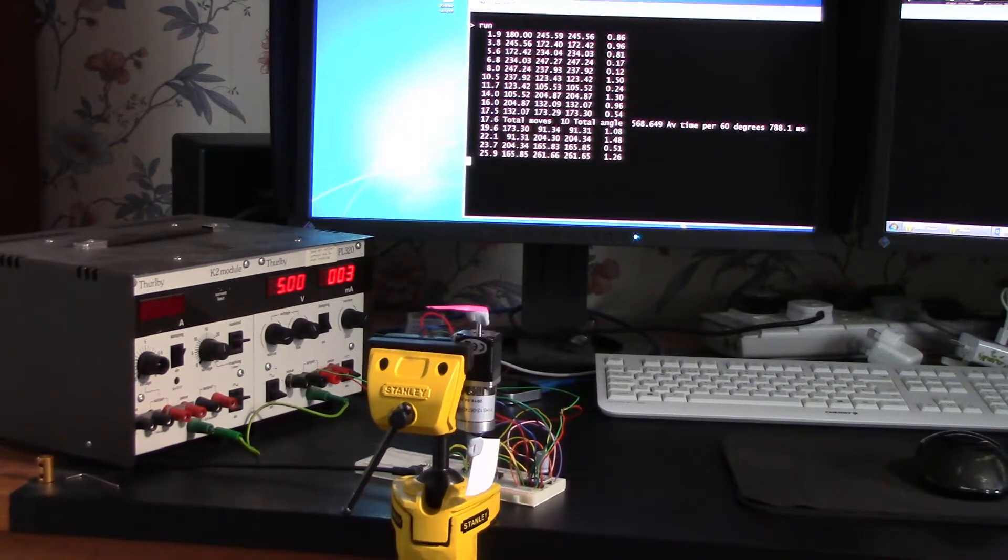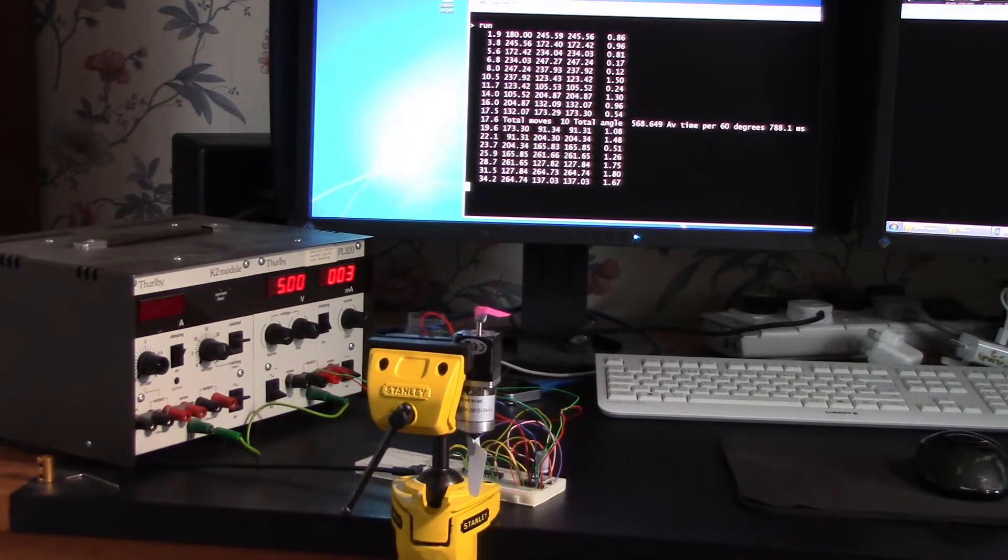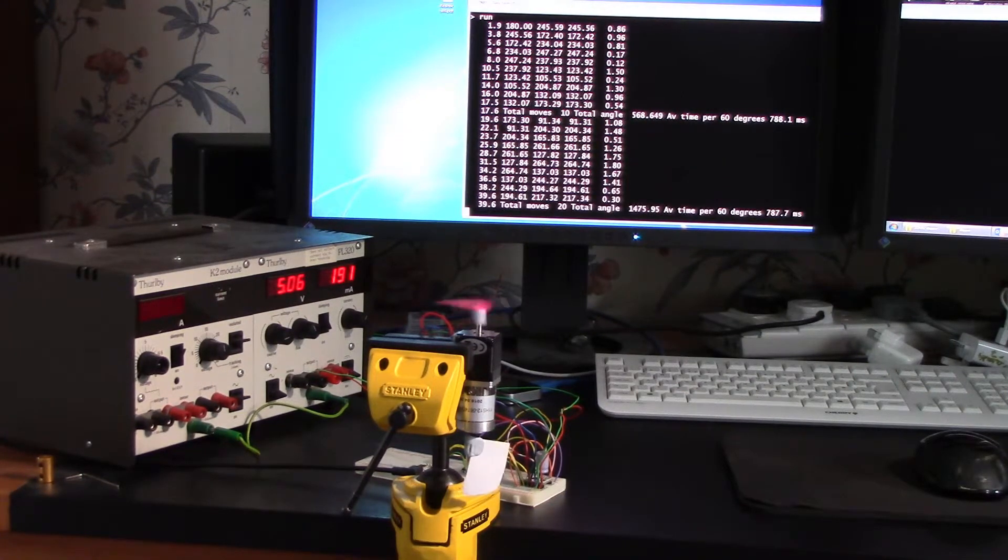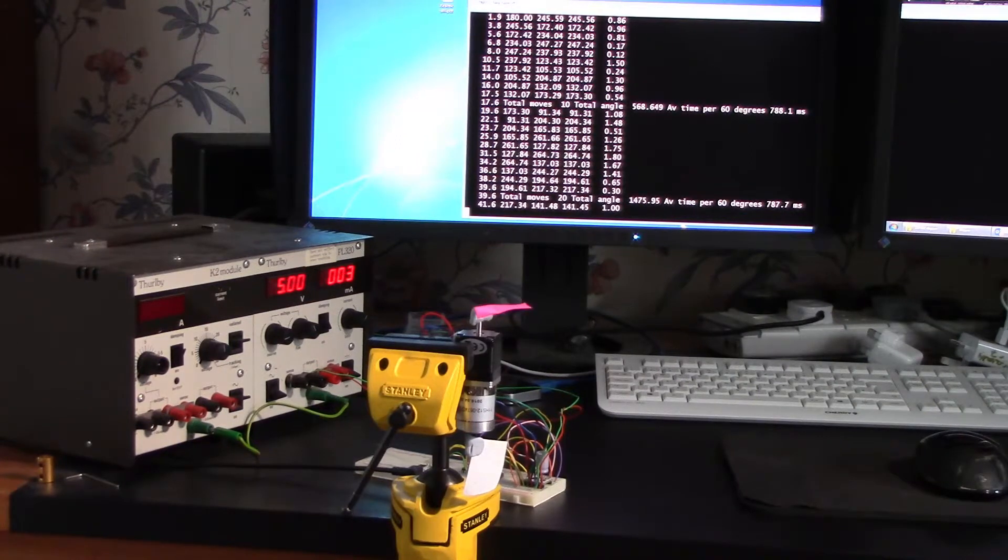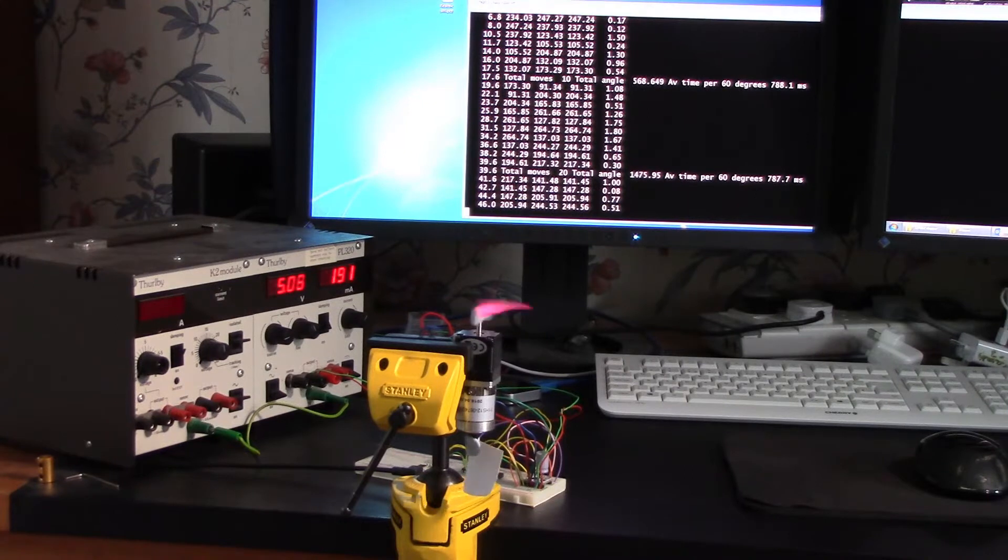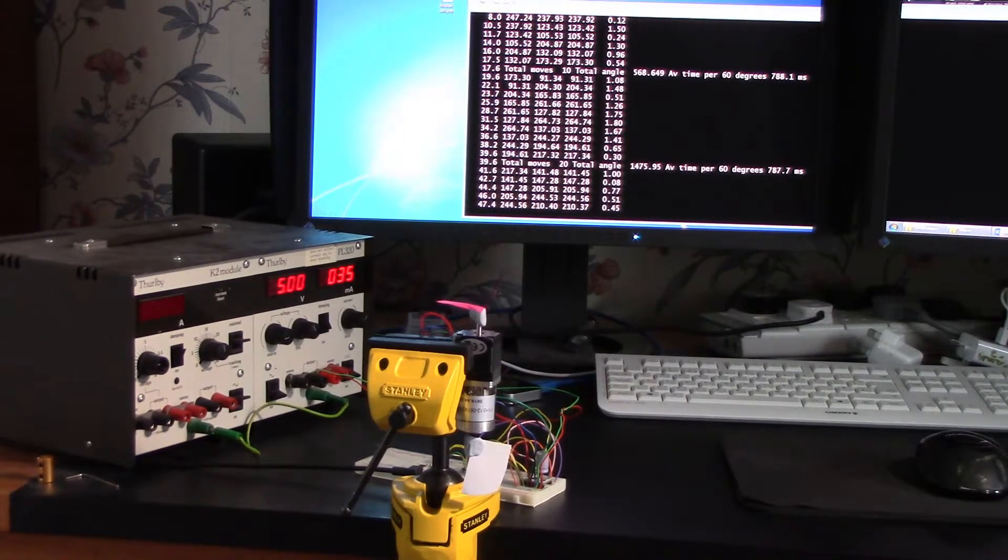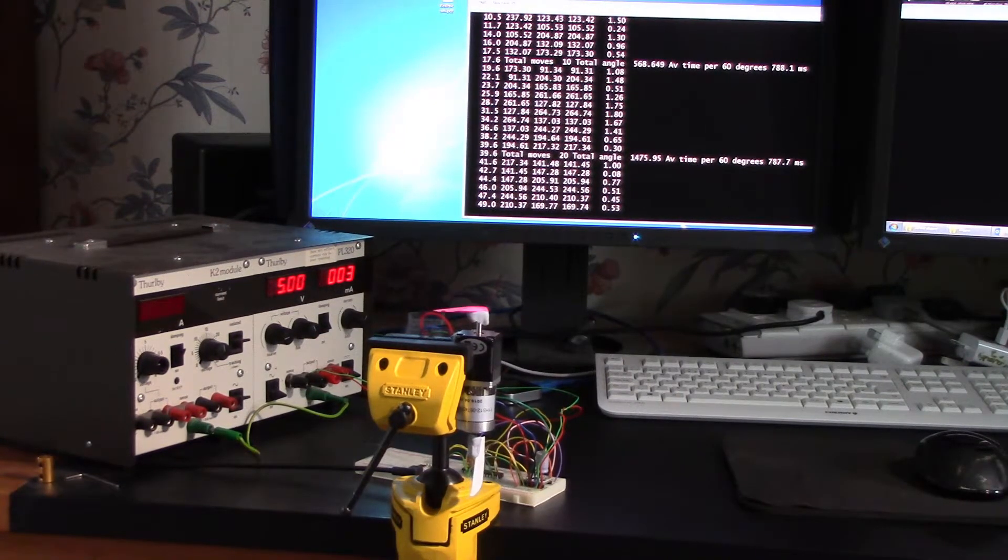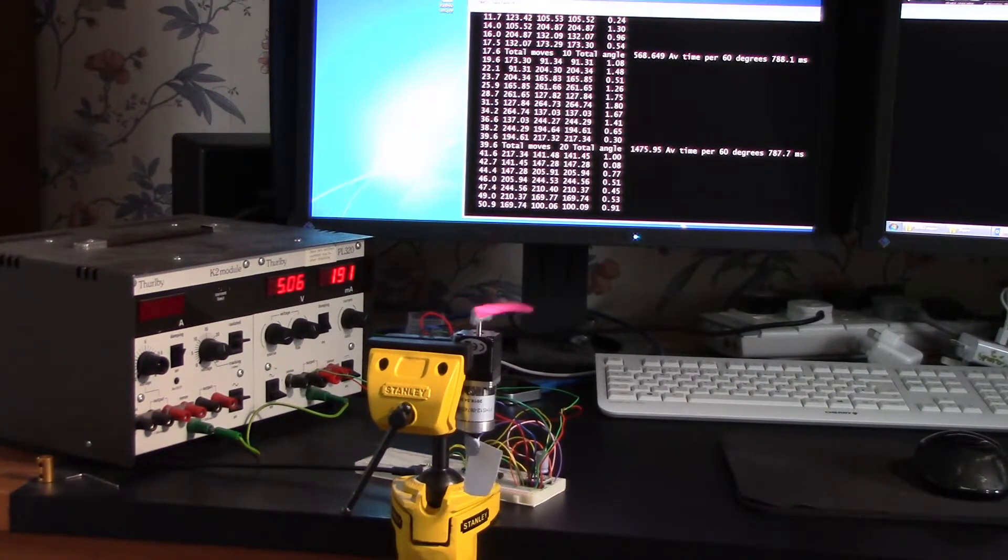The right hand figure is the time for each movement, and on average it moves 60 degrees in 0.788 seconds, which means it's about eight times slower than a brushless Savox servo or maybe four times slower than an ordinary analog servo.